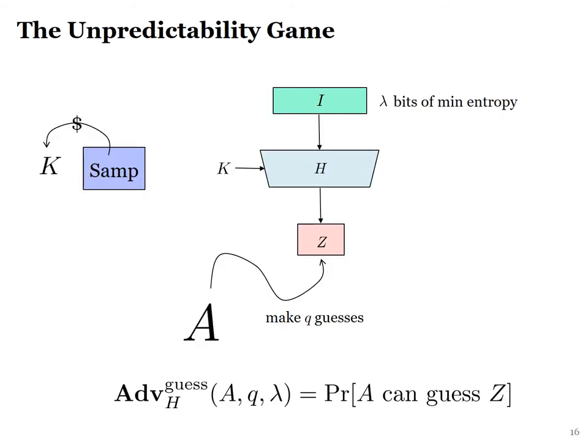Before we analyze the unpredictability of CTE outputs, let's define an unpredictability notion for a keyed hash function h. We first sample a random input i with some bits of min-entropy. We then generate a key k uniformly at random, independent of i. We then hash i under the key k to produce an output z. We define the guessing advantage of an adversary A against h via q queries as the probability that A can guess z via q guesses.